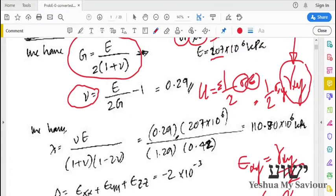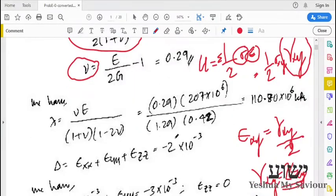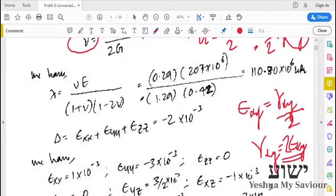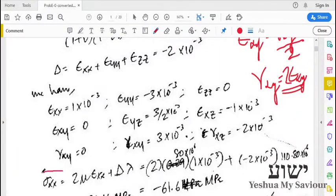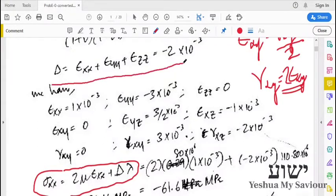Now, we have another relationship that relates stress and strain. For the diagonal components, or the normal components, we have σ = 2μ ε_xx + δλ, where δ is the dilation. Lambda is the first Lamé parameter, μ is the modulus of rigidity.